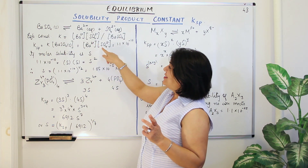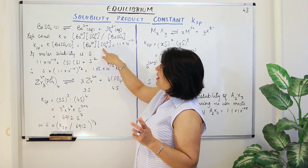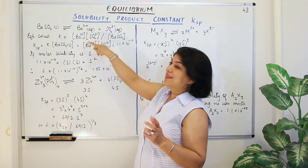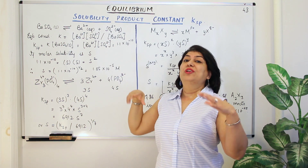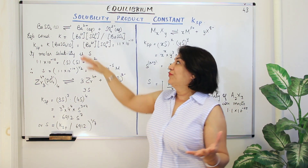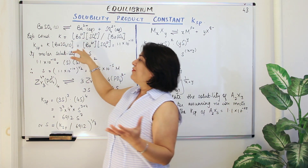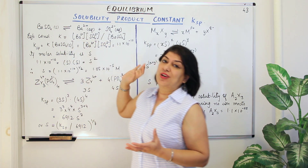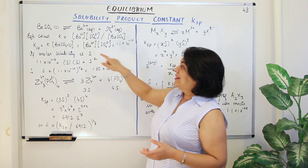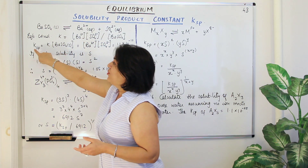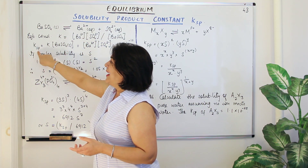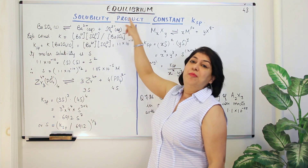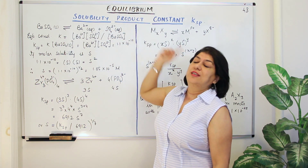Now since this is just the product of the ions, and these ions relate to the solubility of the salt, we call it the solubility product constant. This constant is known as KSP, the solubility product constant.